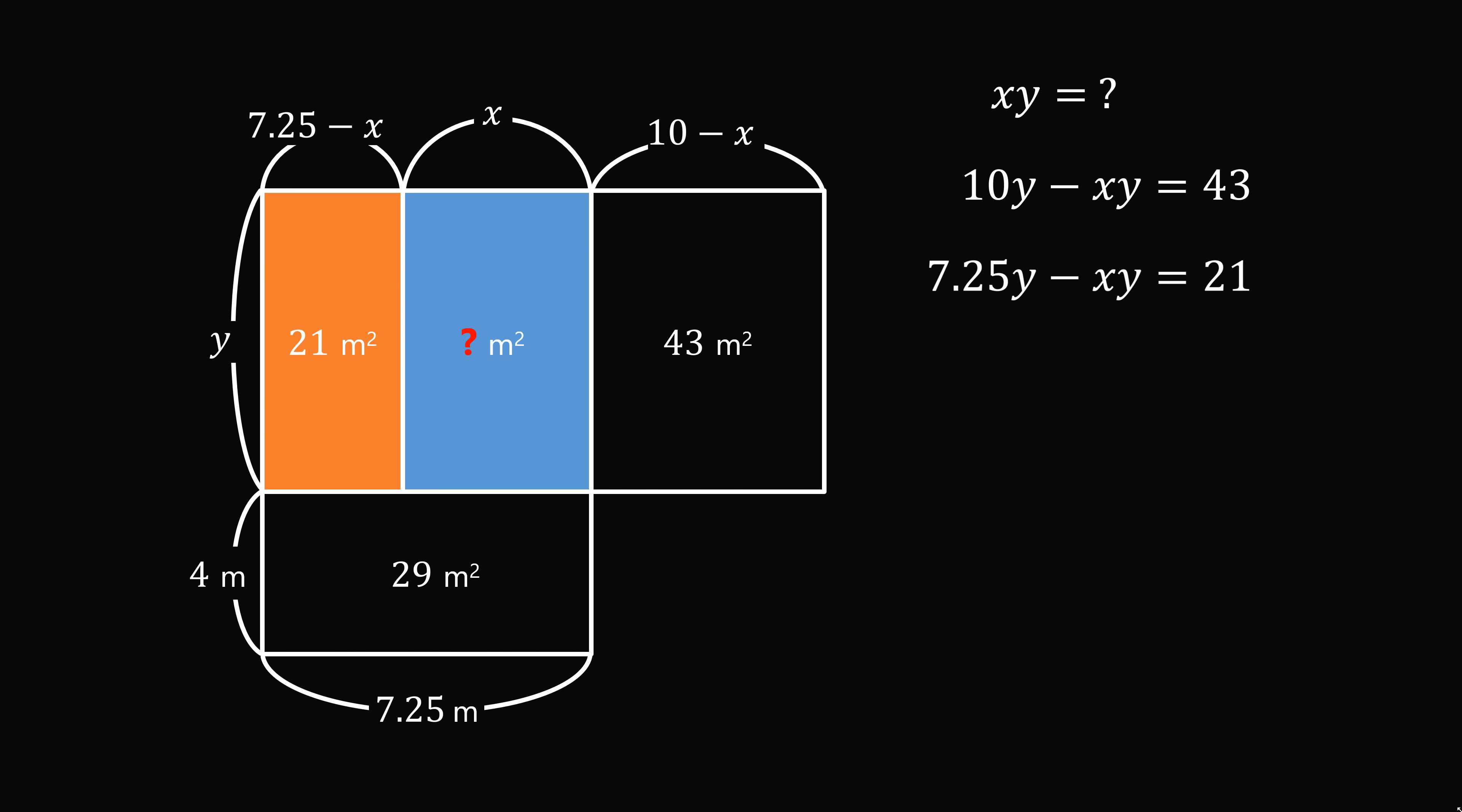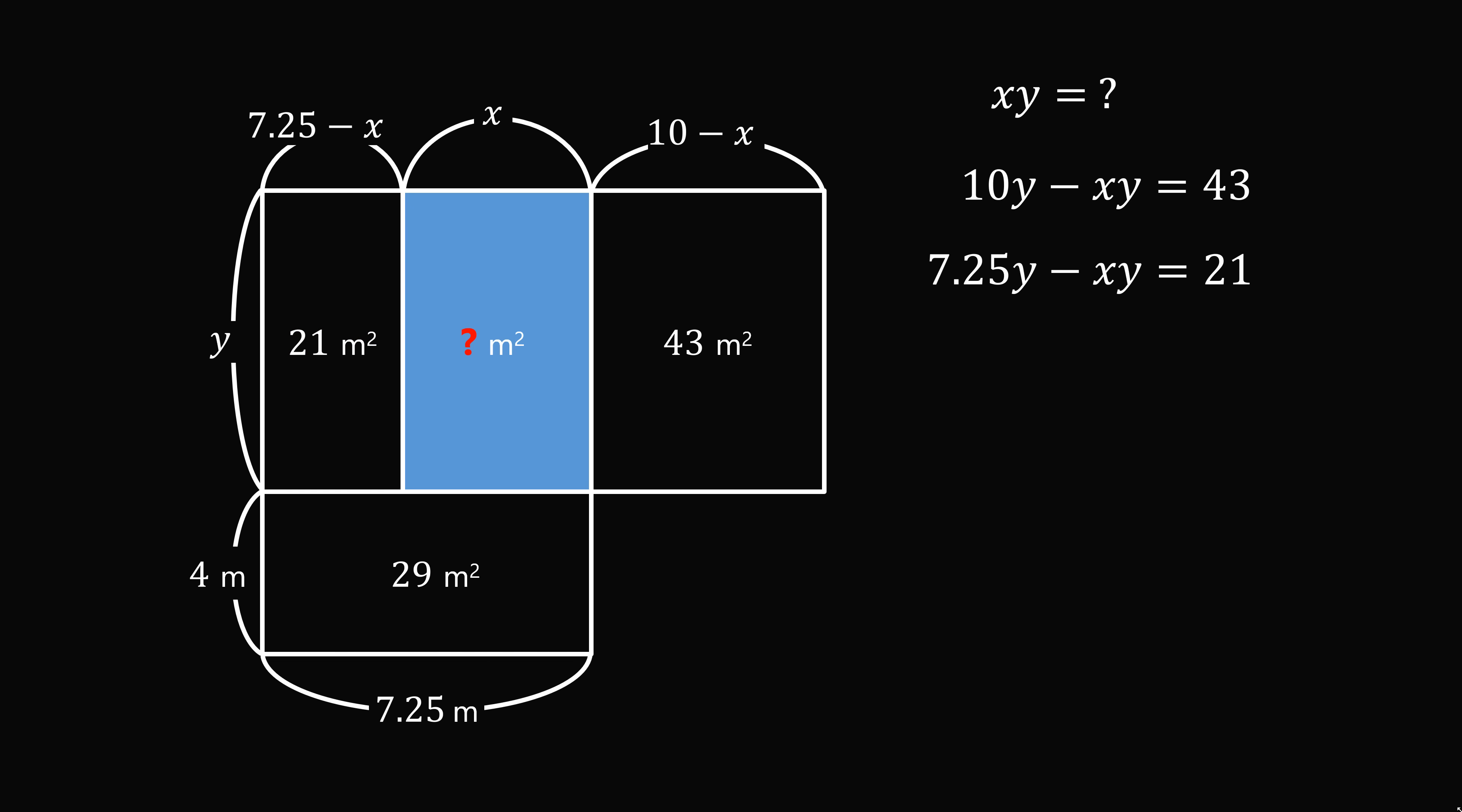So we now have a system of two equations. Subtract the second equation from the first. This will give 2.75y is equal to 22, so that y is equal to 8. We can substitute into the first equation. This will give 80 minus xy is equal to 43. So xy is equal to 37. And that's the answer.